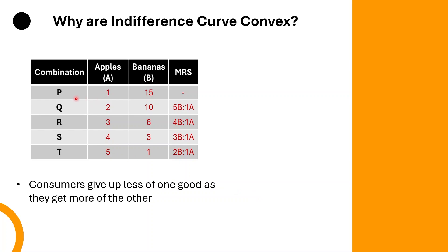Here, if you are looking at combination P, the consumer is consuming one apple and 15 bananas. But for the combination Q, in order to gain one more apple, he is letting go five bananas. For combination R, to consume one more apple, he is letting go four bananas.